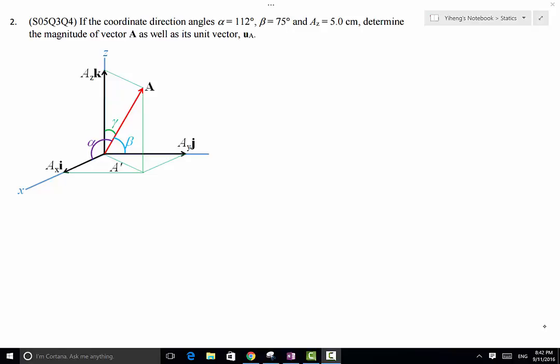In this problem we have a vector A already sitting in the x, y, z rectangular coordinate system. It has three coordinate direction angles, alpha, beta, and gamma. These are the angles made by this vector A and the positive x, positive y, and positive z axes respectively.